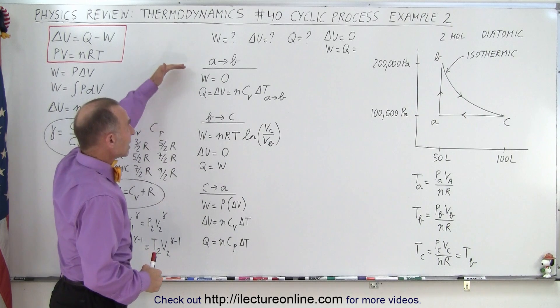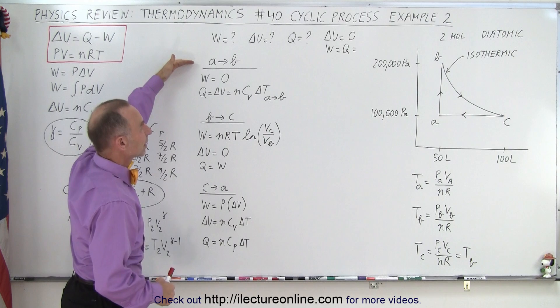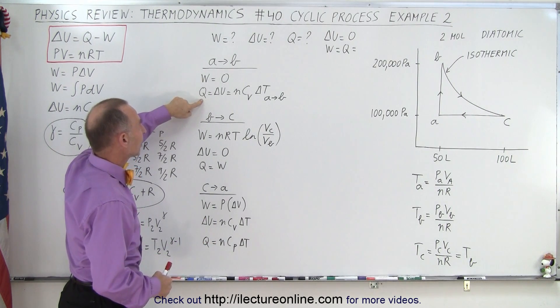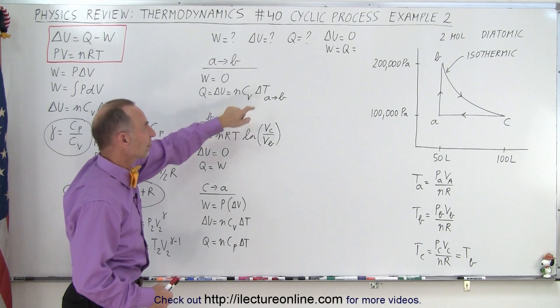Then we need to take each of the parts of the cycle one at a time. First, from A to B, it is an isovolumetric process, so the work done is zero, and the heat added is equal to the change in internal energy, which is equal to nCv times delta T.